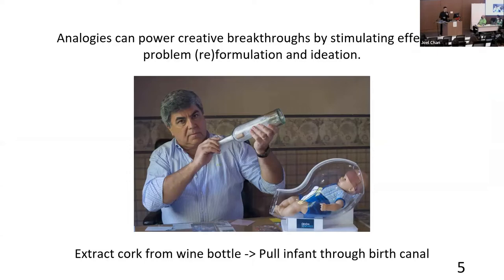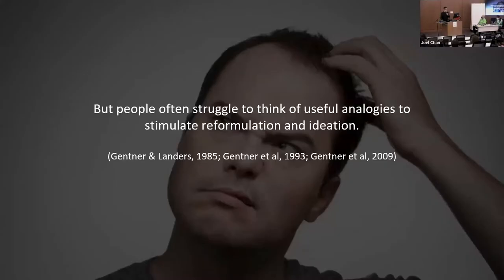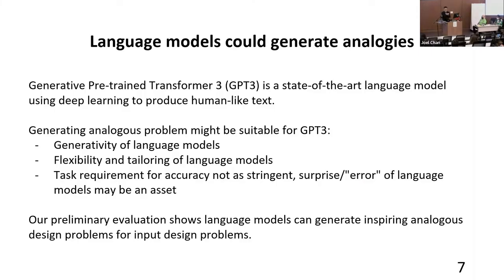Analogies can catalyze critical breakthroughs by stimulating effective problem reformulations and ideation. However, people often struggle to think of useful analogies. So here we can try to use language models to help — for example, GPT-3, a state-of-the-art language model using deep learning to produce human-like text.